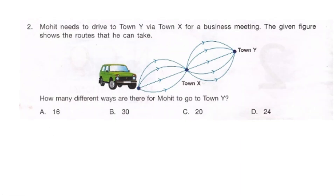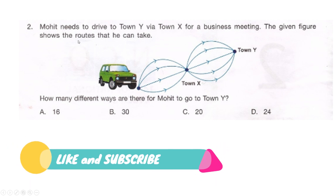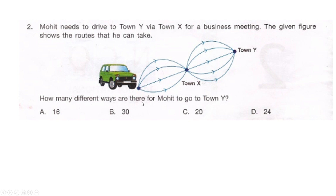Our next question: Mohit needs to drive to town Y via town X for a business meeting. The given figure shows the routes he can take. How many different ways are there for Mohit to go to town Y? Is it option A: 16, option B: 30, option C: 20, or option D: 24? Try this out while I wait for your answer.